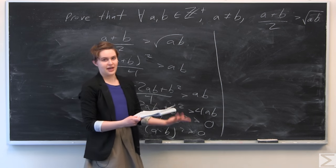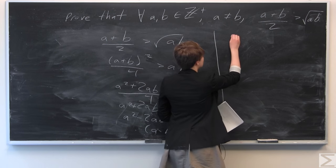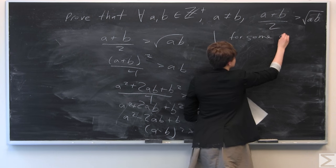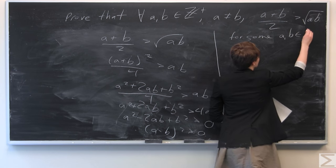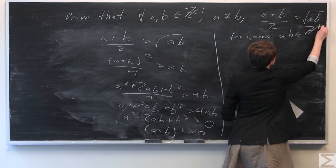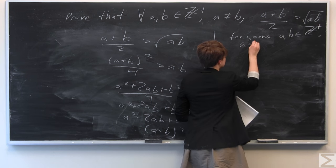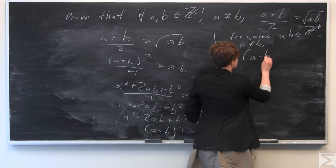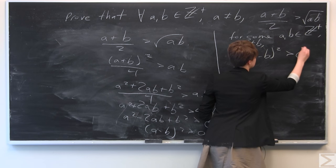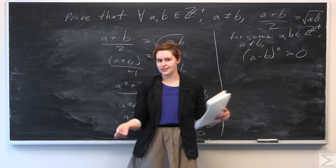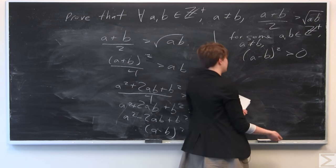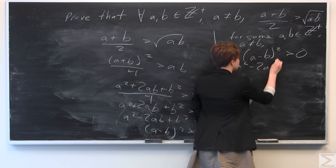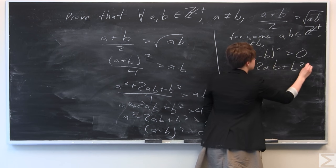We're going to start from a is not equal to b. For some a and b positive integers where a is not equal to b, we know the following statement holds: a minus b, quantity squared, is always going to be greater than 0. We expand this out: a squared minus 2ab plus b squared is greater than 0.